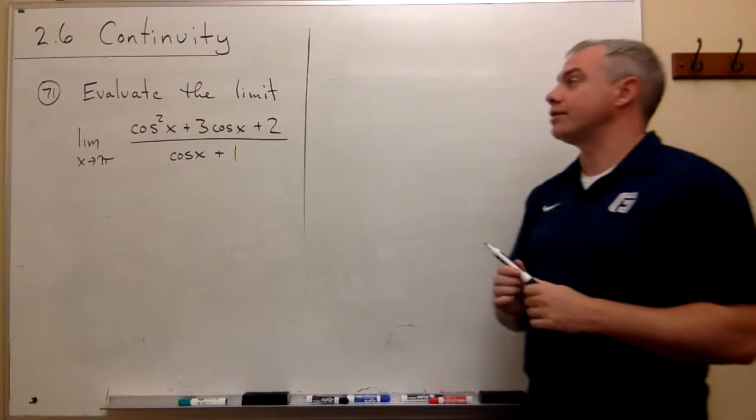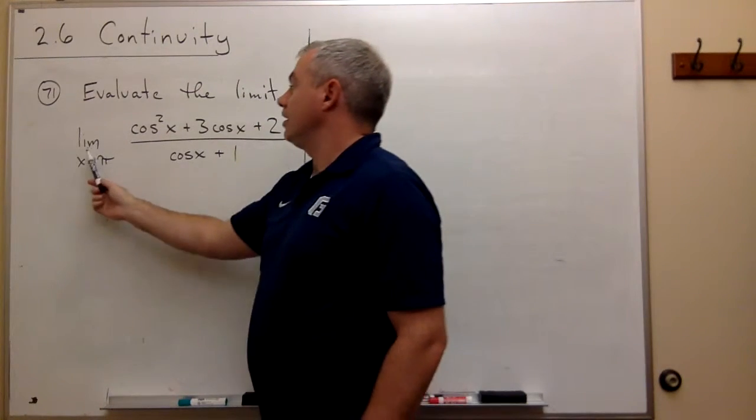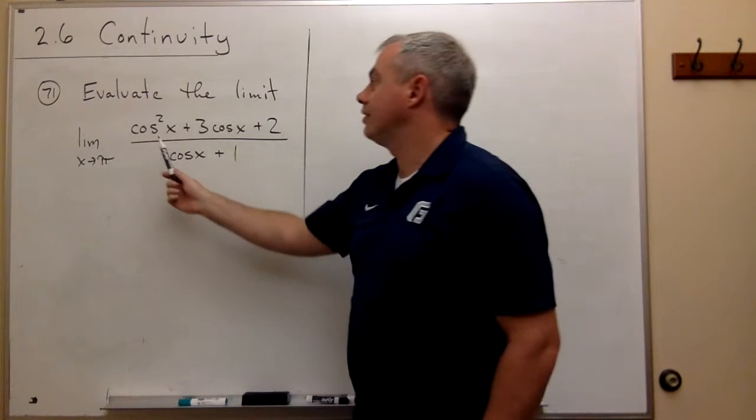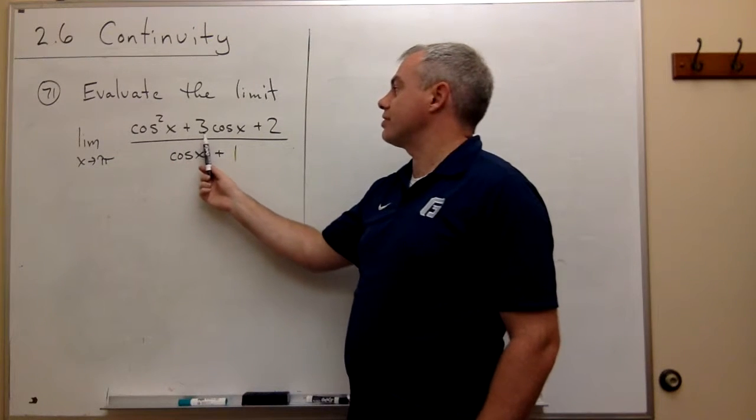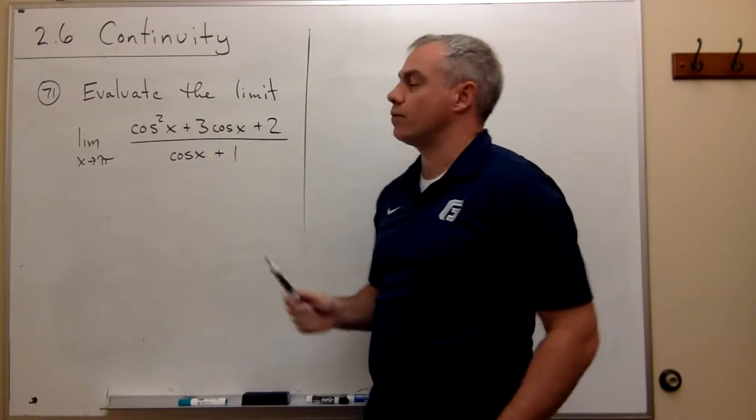In problem number 71 we want to evaluate the limit as x goes to pi of cosine squared of x plus 3 cosine of x plus 2 over cosine of x plus 1.